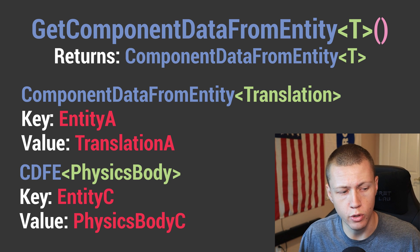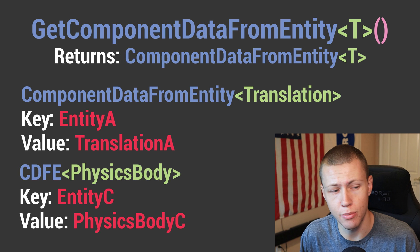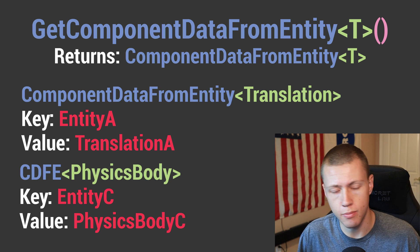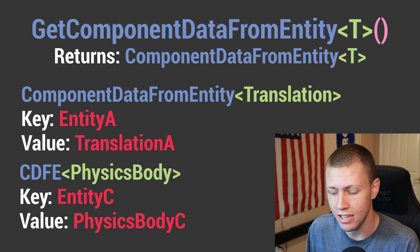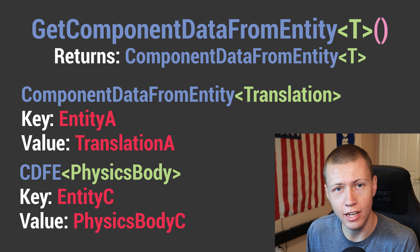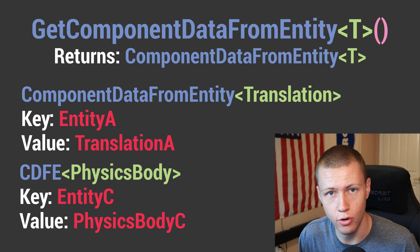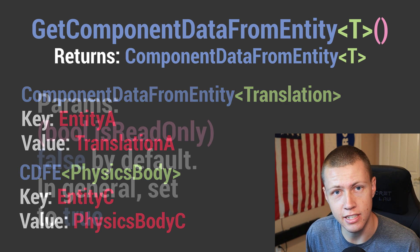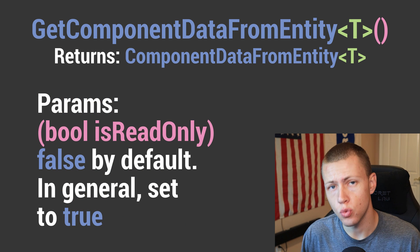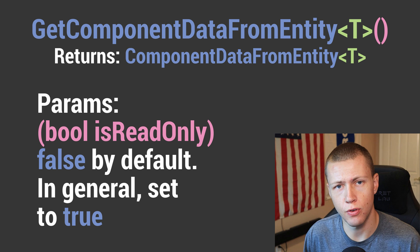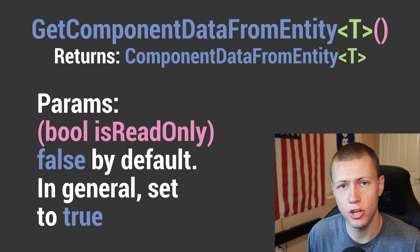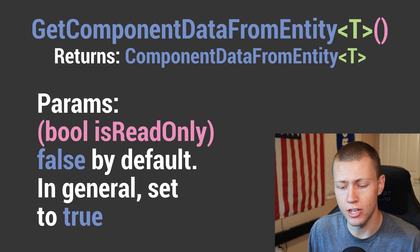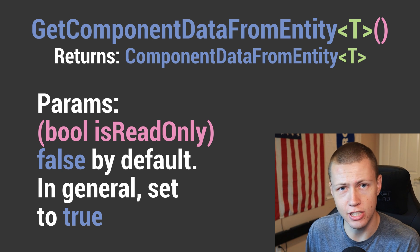So if we want to find the Translation component of one particular entity in our game world, we can pass that entity into the collection and it will return the specific Translation component associated with that entity. There is one parameter we can pass into this function, which is the isReadOnly parameter. This is false by default, however in general we pretty much always want to pass in true.